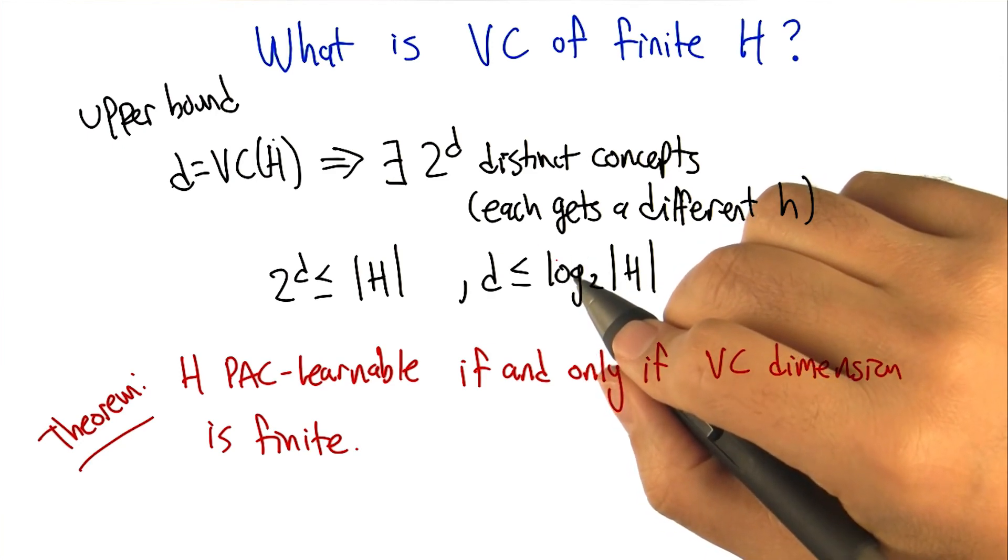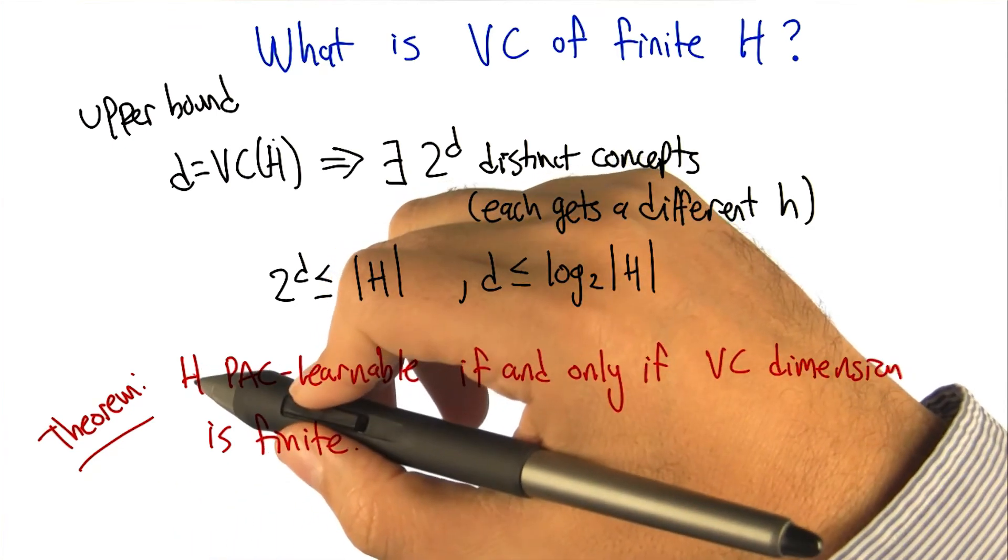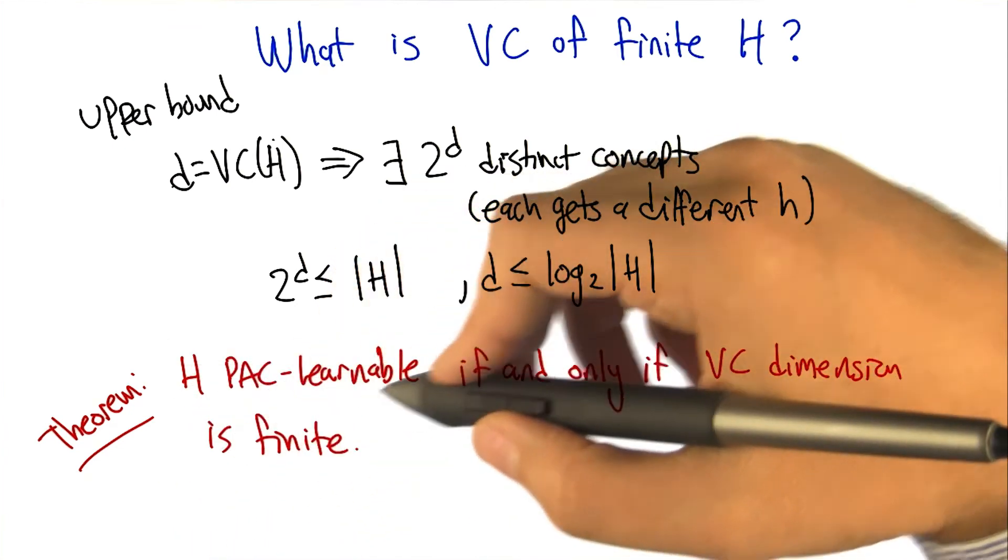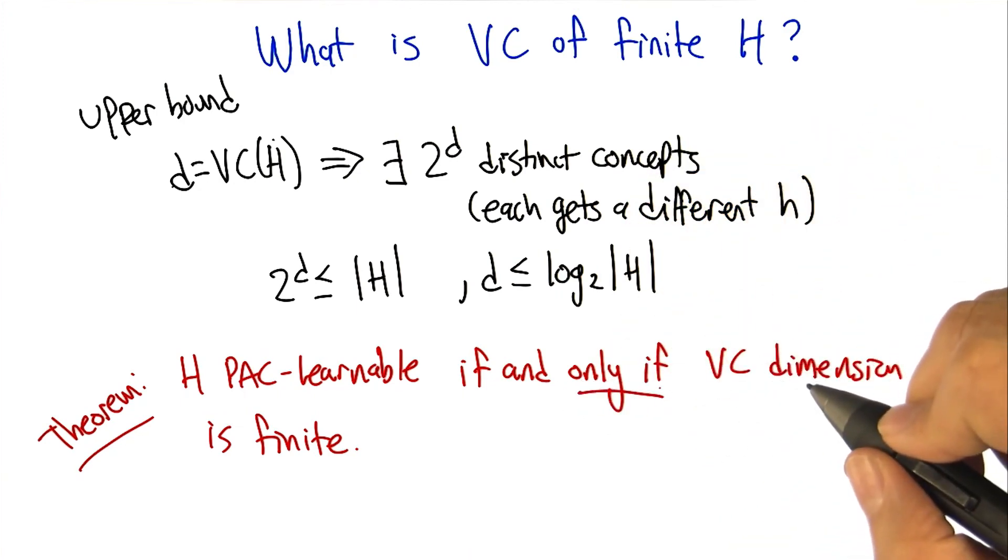What's kind of amazing though is that there's a general theorem that says, in general, H is PAC learnable if and only if the VC dimension is finite. So that means that we know that anything that has finite VC dimension is learnable from the previous bound, but we're saying that it's actually the other way as well. That if something is learnable, it has finite VC dimension.